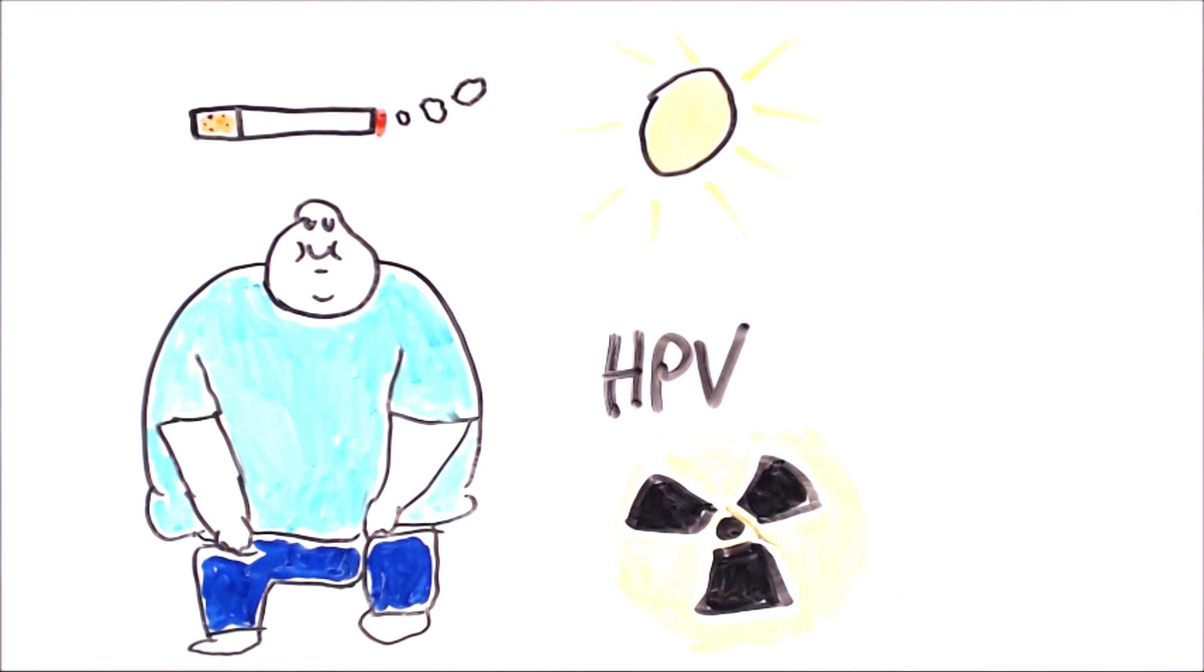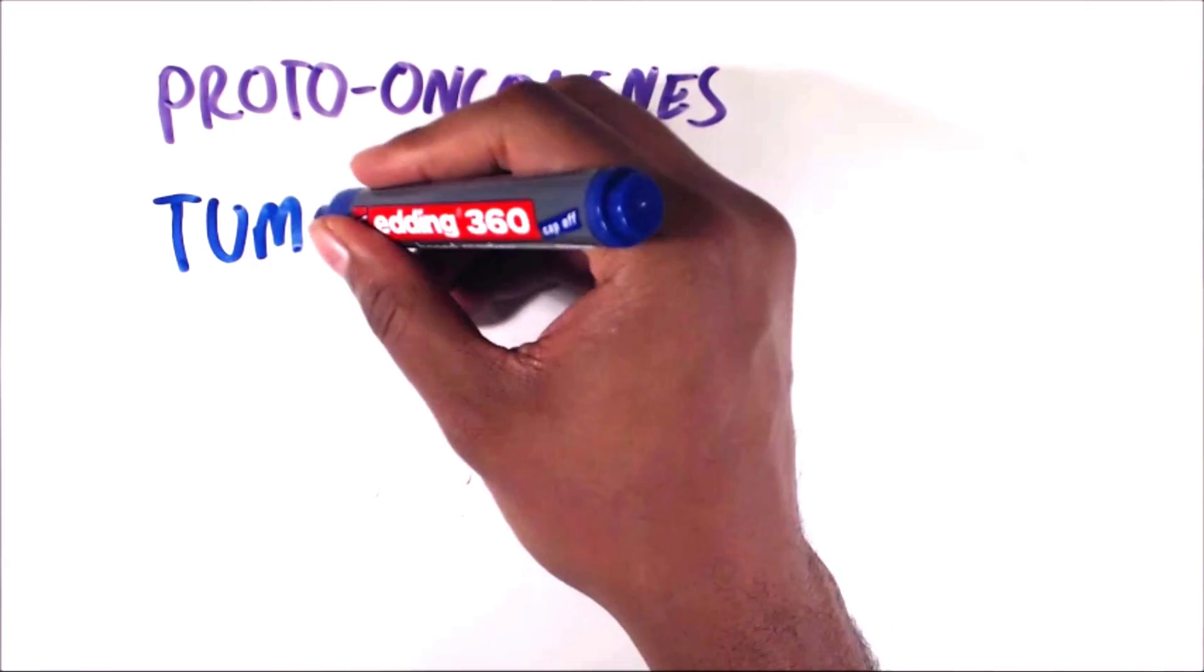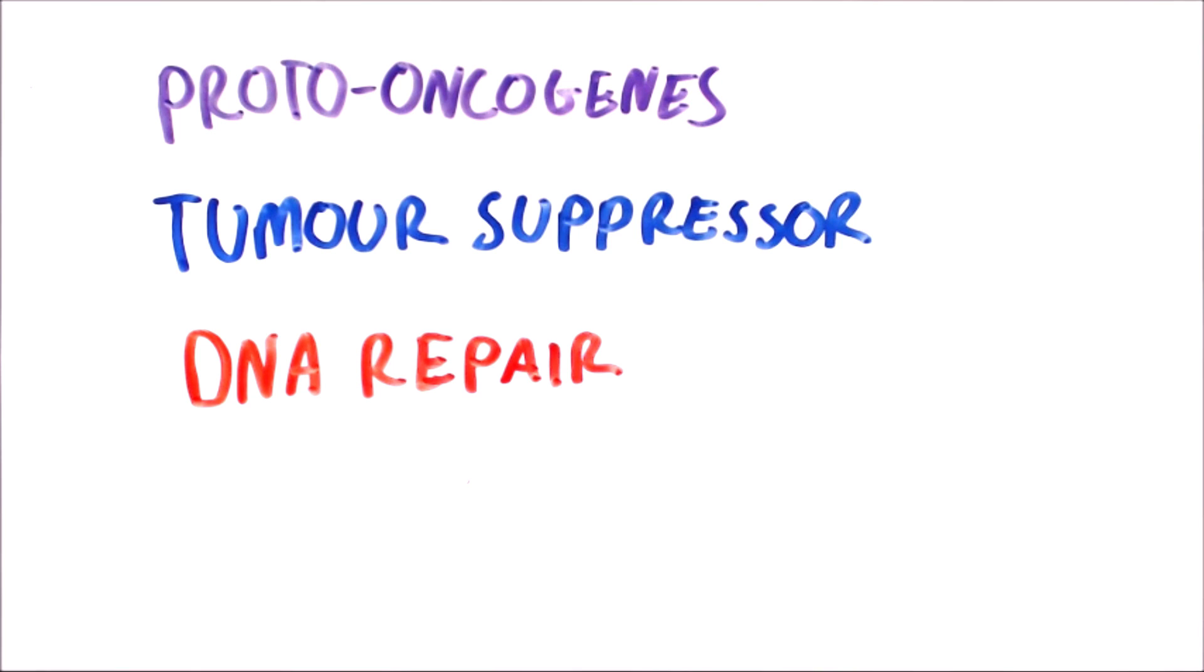The genetic changes that lead to cancer affect three main types of genes. These are proto-oncogenes, tumour suppressor genes, and DNA repair genes.